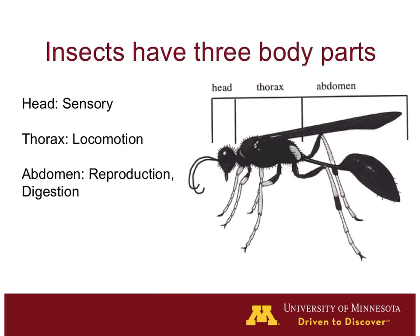To be clear, all of these different functions happen throughout all the different segments. But in a general sense, we can say the head is for sensing, the thorax is for locomotion, and the abdomen is for reproduction and digestion.